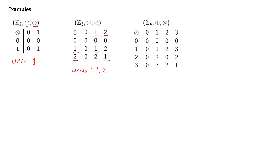Adding a new element, we have Z4 with a similar definition for addition and multiplication modulo 4. The units are the elements 1 and 3, because the inverse of 1 is 1 and the inverse of 3 is also 3. So the units here are 1 and 3.